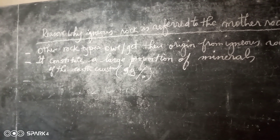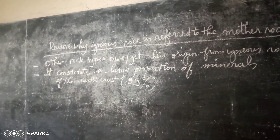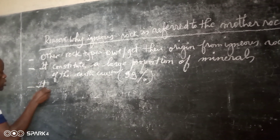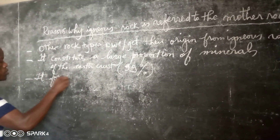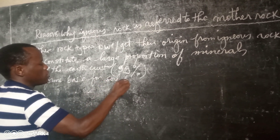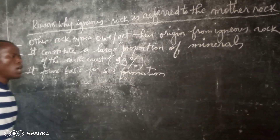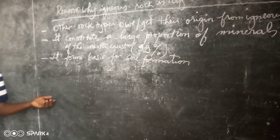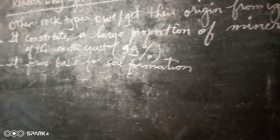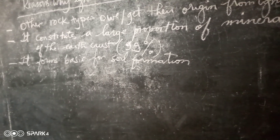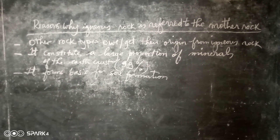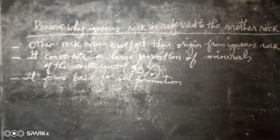Number three: igneous rock forms the basis for soil formation. Meaning that other types of rock, like sedimentary rock or metamorphic rock, cannot exist greatly without the influence of igneous rock. So therefore, those are the three main reasons why igneous rock is referred to as the mother rock.